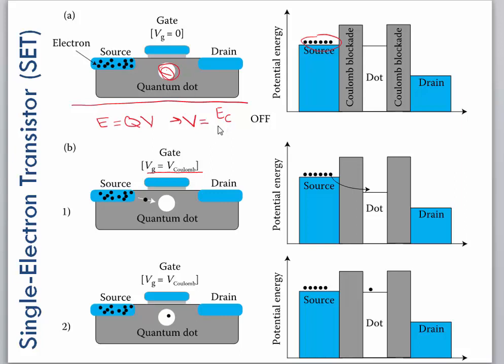So we need a voltage that's equal to, instead of E, we're going to use E_C, the energy of the Coulomb blockade, divided by the charge on electrons. So instead of Q we're going to use e, which is the charge on an electron.